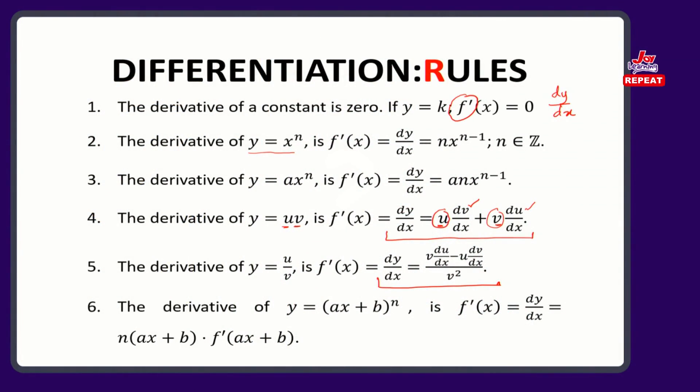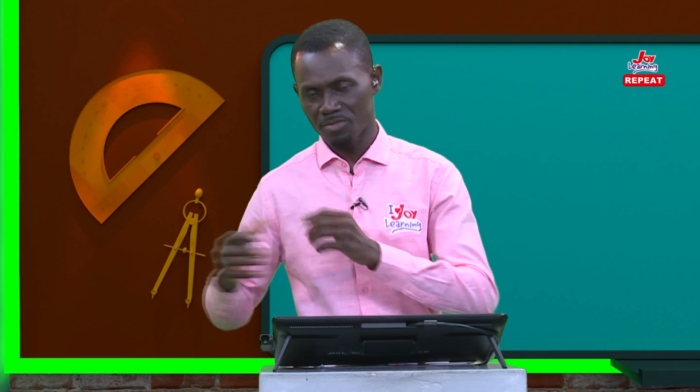Then the derivative of something like y equals (ax plus b) to the power n — this time we have what we call a composite function, or a chain function, so it's a chain rule. When we say ax plus b to the power n, we're simply saying ax plus b multiplied as many times as n is. So it means it is a function dependent on another function, and we deal with it using the chain rule.